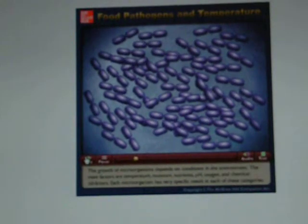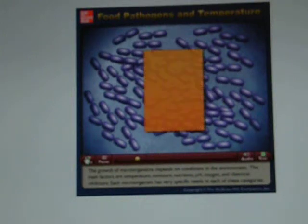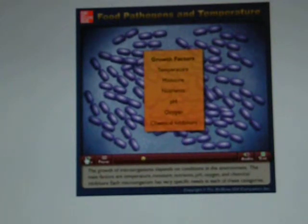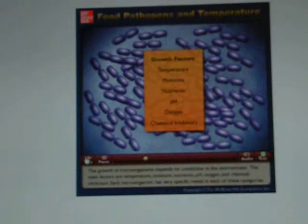The growth of microorganisms depends on conditions in the environment. The main factors are temperature, moisture, nutrients, pH, oxygen, and chemical inhibitors. Each microorganism has very specific needs in each of these categories.